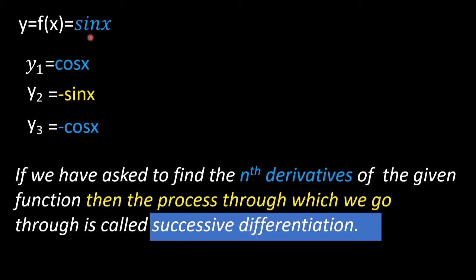The process used to find the nth derivative is called successive differentiation. For the function y = f(x) = sin(x), the first differentiation gives cos(x), the second gives minus sin(x), the third gives minus cos(x), and the fourth differentiation gives minus of minus sin(x), that is sin(x). So the value comes back.